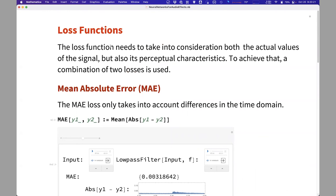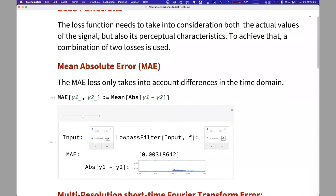The last ingredient, and I will try to go very quickly here, is the loss. Judging how the result of the network is different from the target is kind of tricky.